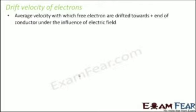Drift velocity of electrons. So what is drift velocity? It is the average velocity with which electrons are drifted towards the positive end of a conductor under the influence of an electric field.